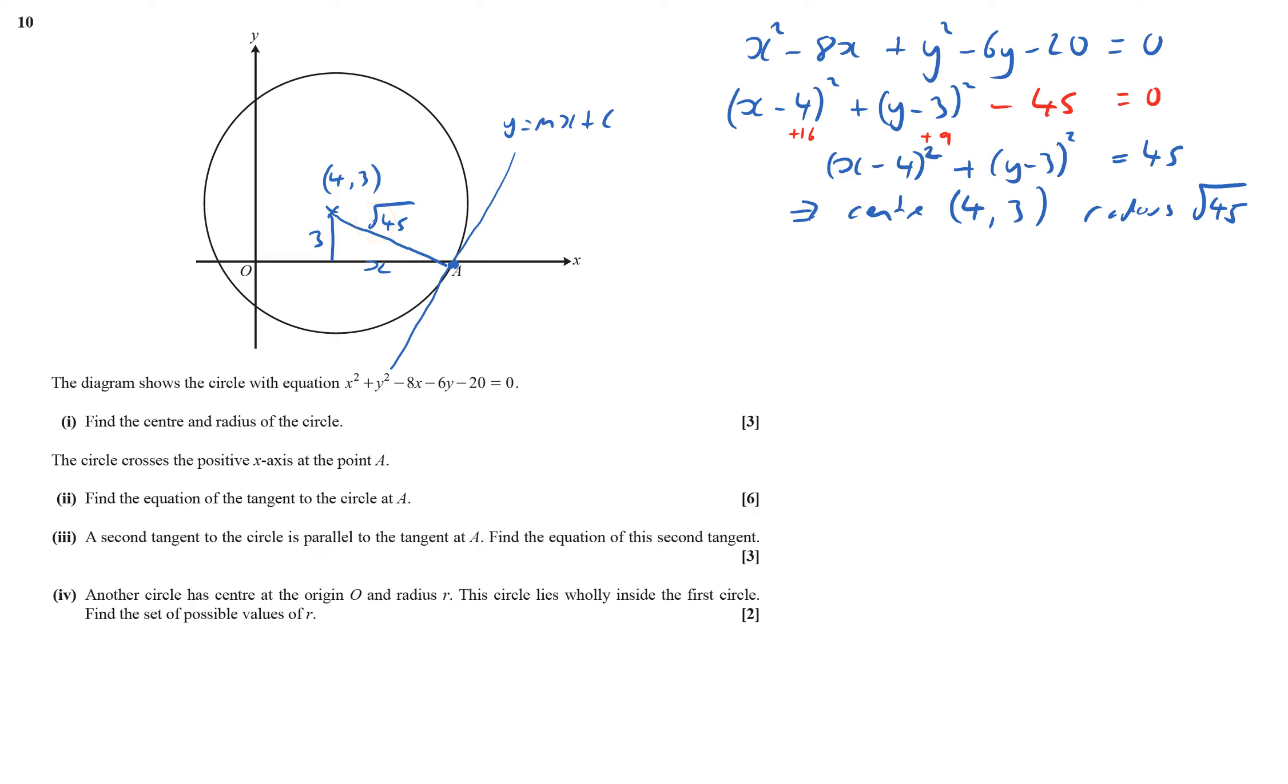So x squared plus 3 squared equals root 45 squared, which is 45. x squared plus 9 equals 36, so x equals 6. Point a is 4 plus 6 across, so it's at (10,0). Now I can work out the gradient.